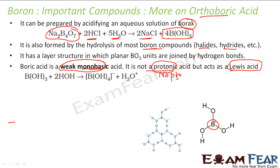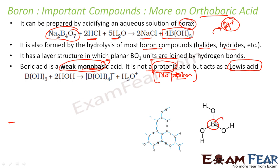Boric acid does not donate a proton — it is not a proton donor. The reason it is acidic is that boron is hungry for electrons; it is an electron acceptor. Most acids we think of, like hydrochloric acid and sulfuric acid, are strong acids and proton donors — they donate H⁺ ions in aqueous solution. But boric acid cannot donate H⁺ ions, so it is not a protonic acid. It is a weak Lewis acid, with Ka as low as 10⁻⁹ — an extremely weak monobasic acid.